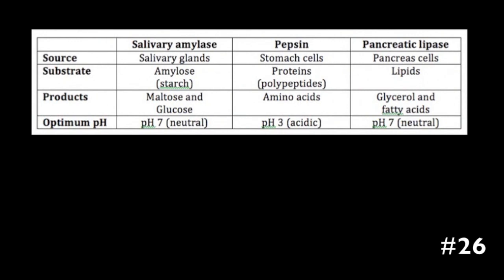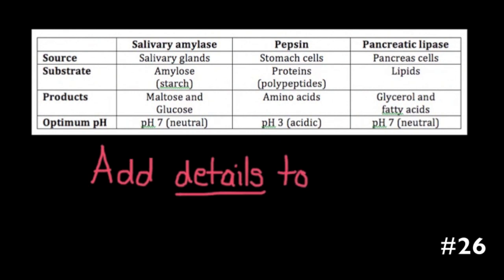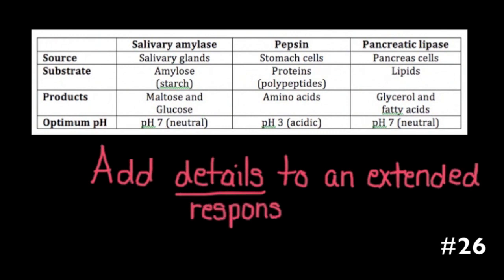When students were given an extended response question regarding digestion, one of the things that was rarely mentioned was the details about the source, substrate, products, and optimum pH of the different enzymes within the human digestive system. I've given you a table here to remind you, and you need to make sure that you add details if you get an extended response question.